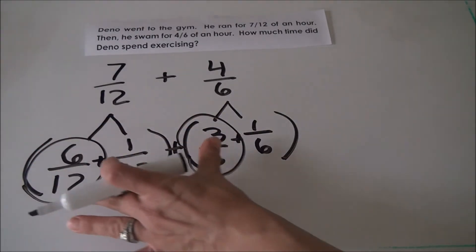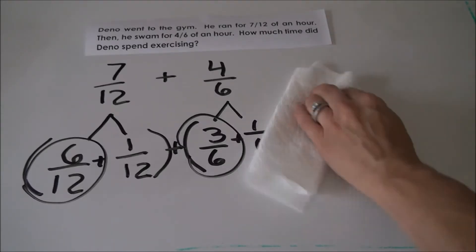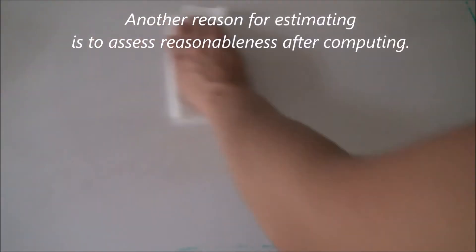We now know that our answer is just a little more than one whole. A second reason fifth graders estimate using benchmark numbers is to assess the reasonableness of the solution after adding or subtracting fractions.